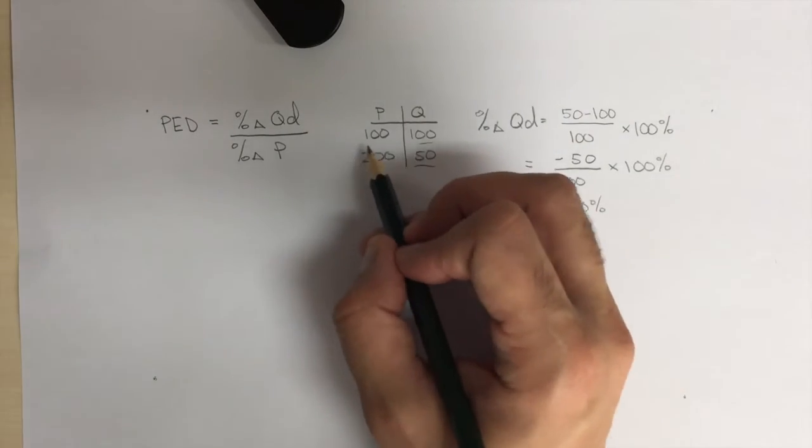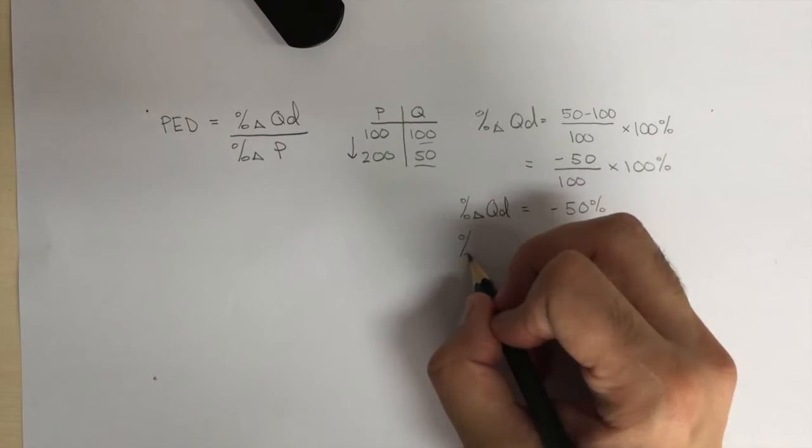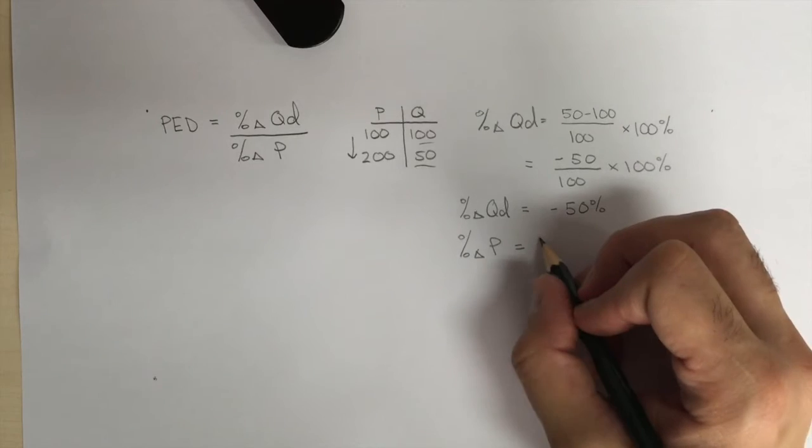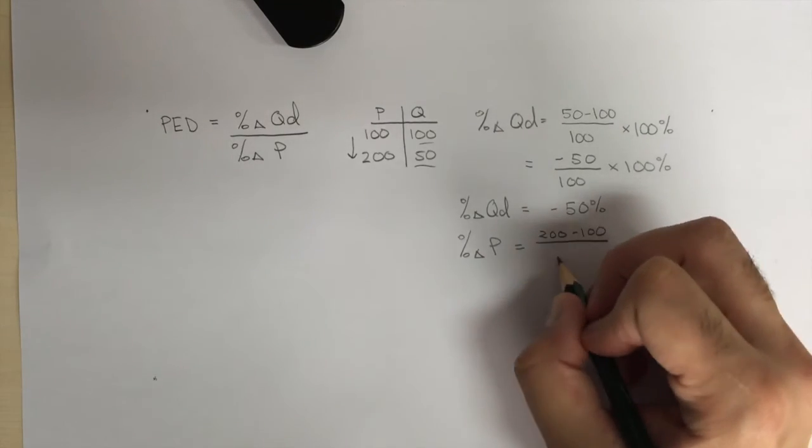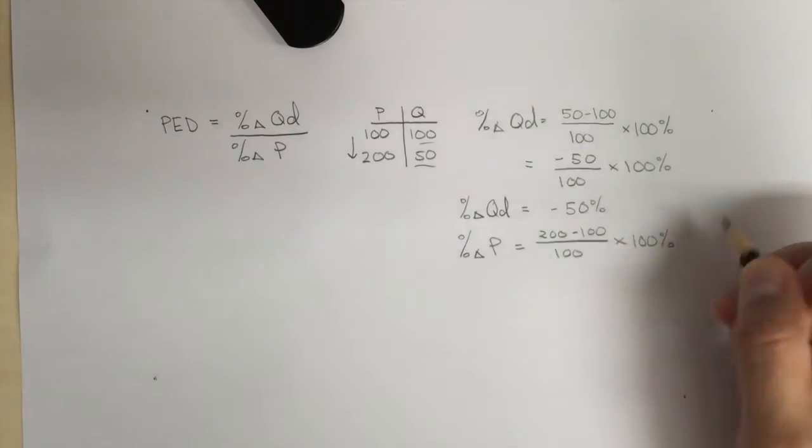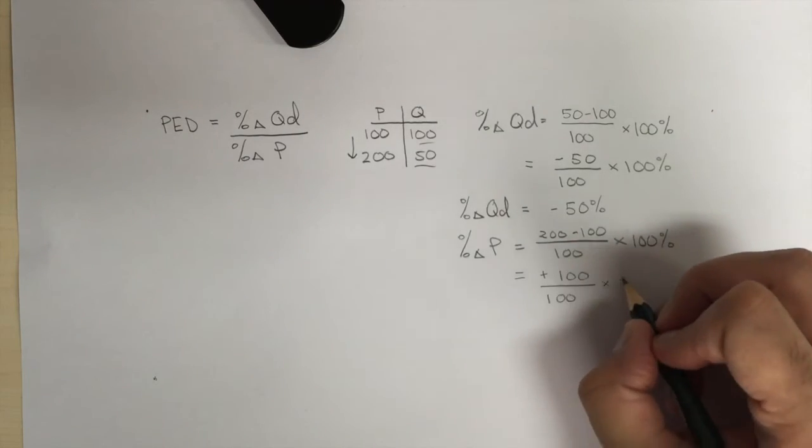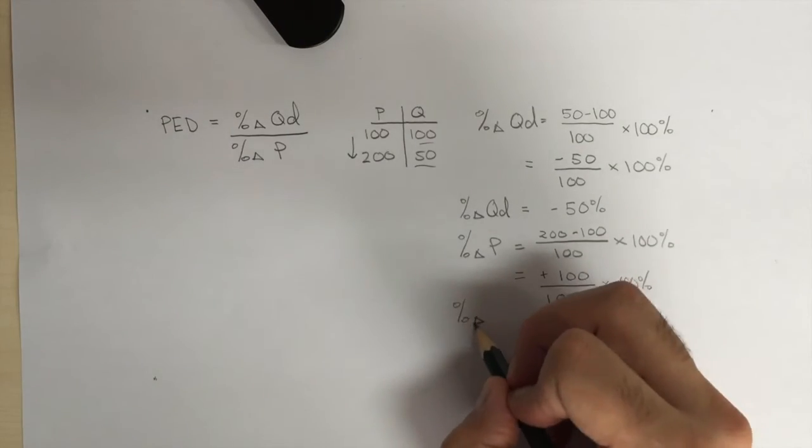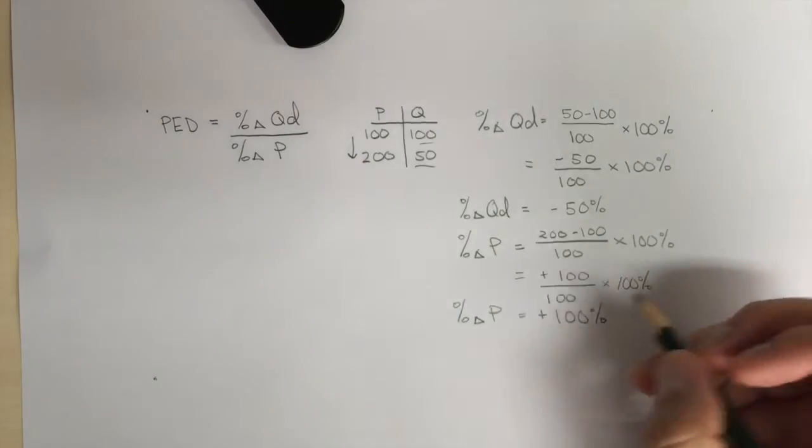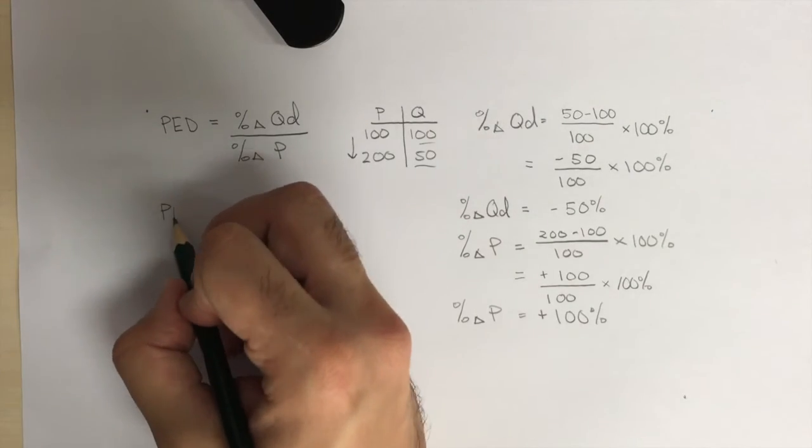Now let's do the same thing for Price. Percent change in price is equal to the new price, $200, minus the old price, $100, divided by the old price of 100, times 100%. And that is a positive 100 divided by 100, times 100%, which gives us a percent change in price of positive 100%.